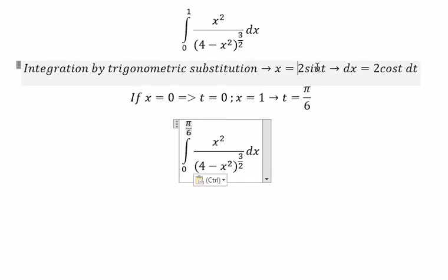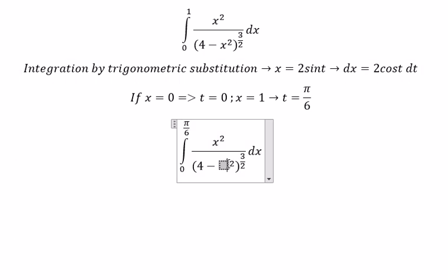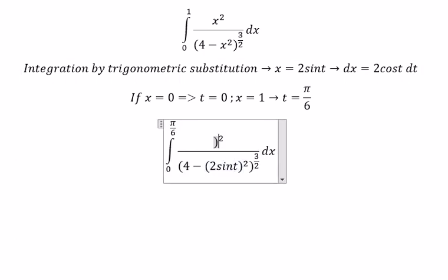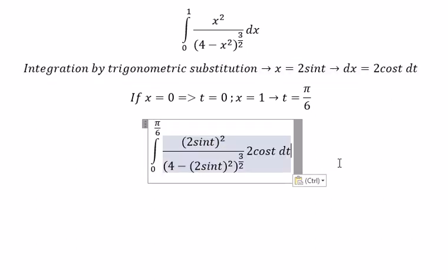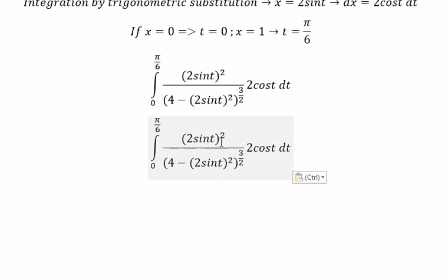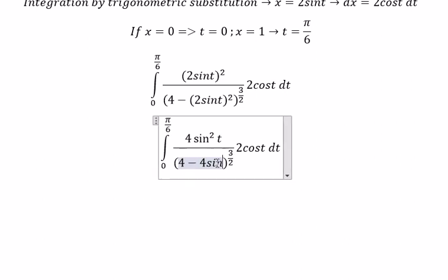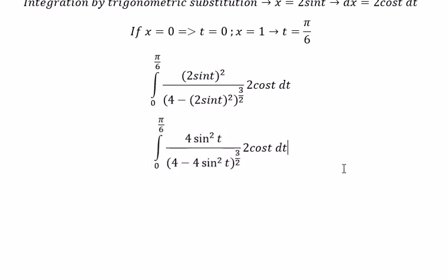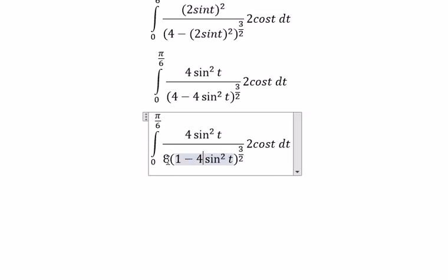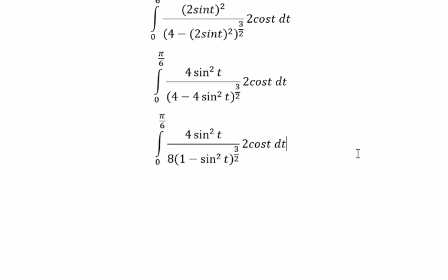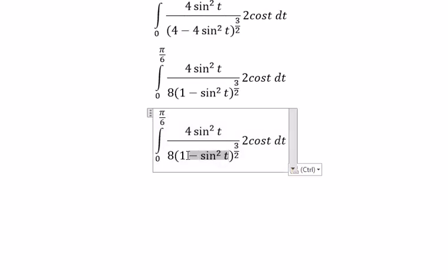s squared we change for this one, and ds we change for this one. So this one we got about 4 sin²(t), and this one you got about 4 sin²(t). 4 to the power of 3/2 you will get about 8. cos(t) to the power of 3/2 — so this one we got about cos²(t).